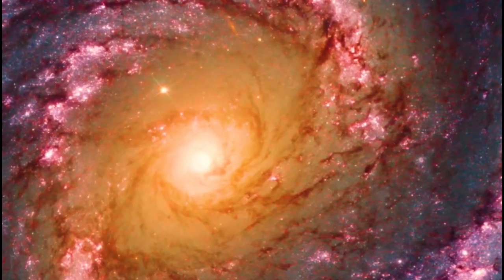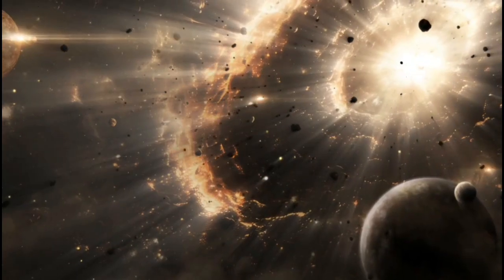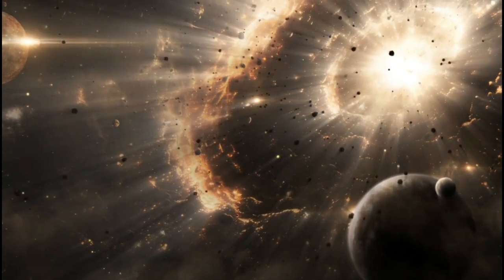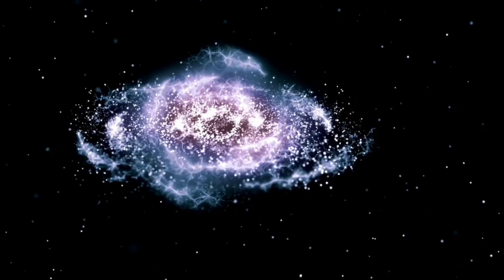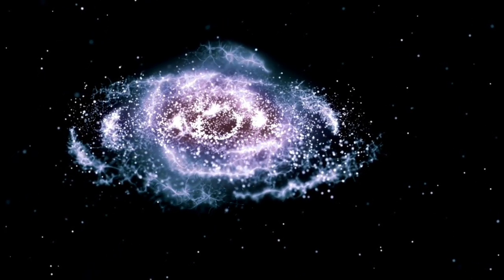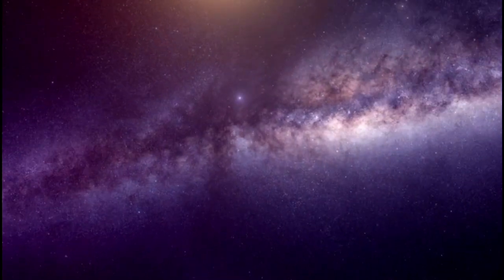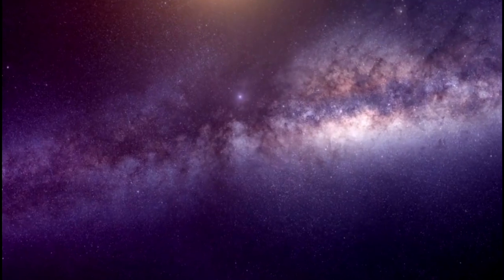Betelgeuse loses about one solar mass every 10,000 years, ejecting materials evenly in all directions, forming a nebula around it. This nebula has a diameter of 30 astronomical units, which is 30 times the distance between the Earth and the Sun and is 250 times larger than the star itself.